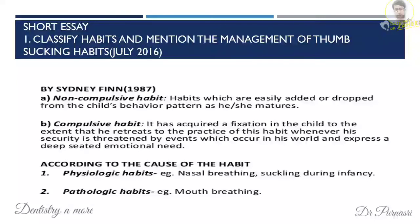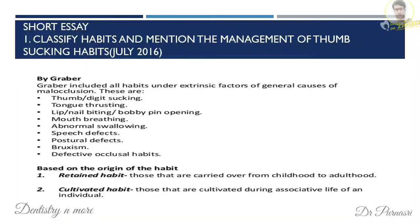According to the cause, we have physiologic and pathological habits. Graber has placed habits in the general factors causing malocclusion. Based on the origin of habit, habits can be divided into retained habit and cultivated habit. That finishes the classification of habits.